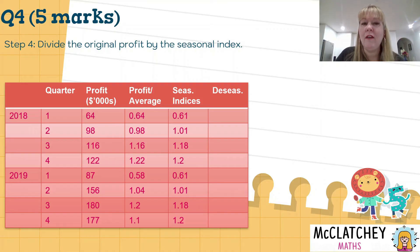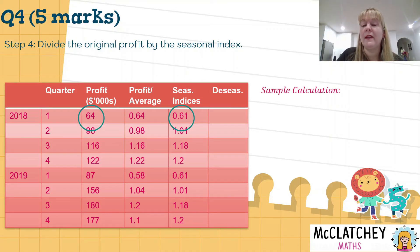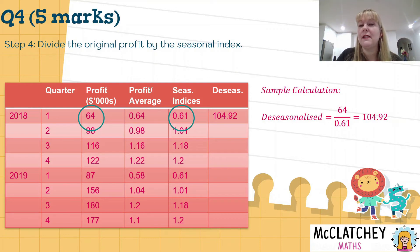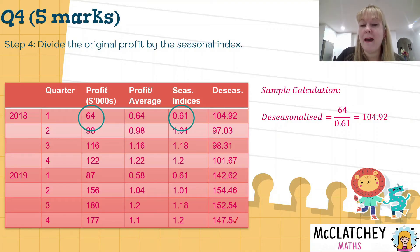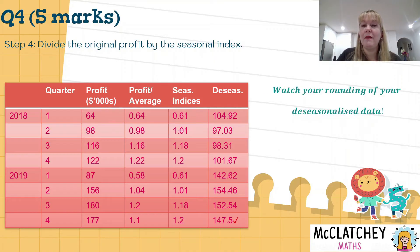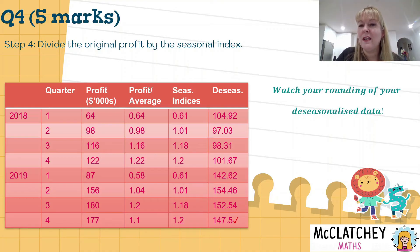Step four: take the original profit figure and divide it by the seasonal index — that de-seasonalises the data. So 64 divided by 0.61 gives de-seasonalised data of 104.92. Repeat that process all the way down and you get your next mark. It's really important that you round to one or two decimal places correctly — students often come undone in this section because they don't round appropriately.